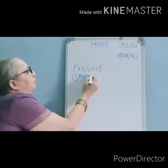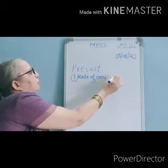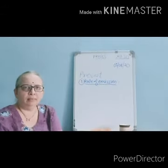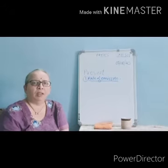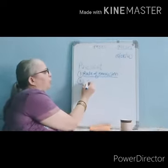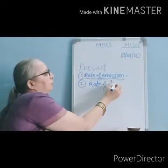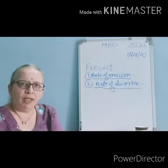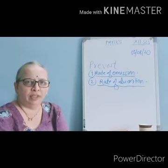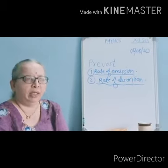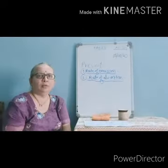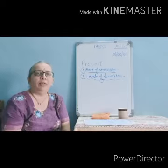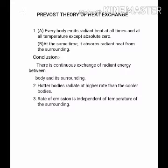Energy emitted by the body per unit second is called its rate of emission. Energy absorbed by the body from its surroundings in the form of radiation per second is called its rate of absorption. In short, we discuss the emissive rate and absorptive rate of the body at a given temperature. Let's have a quick look at Prevost's theory and its explanation.